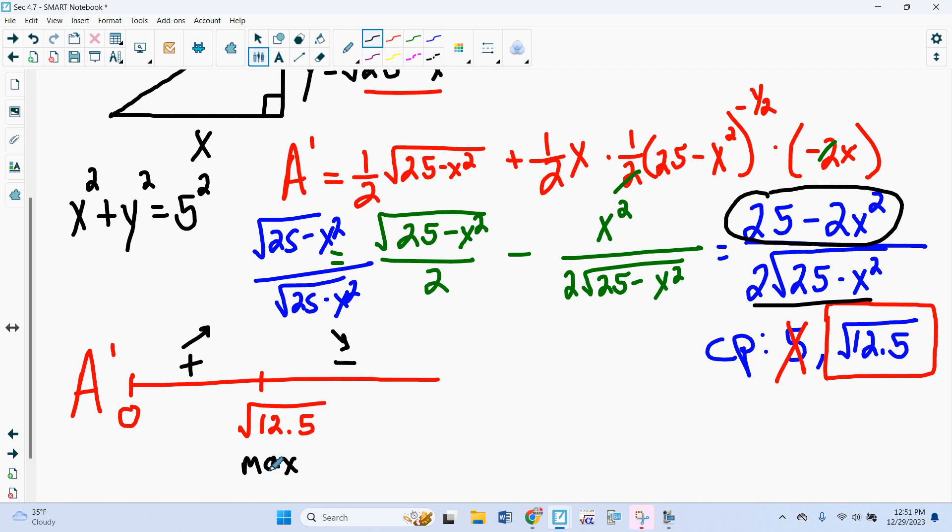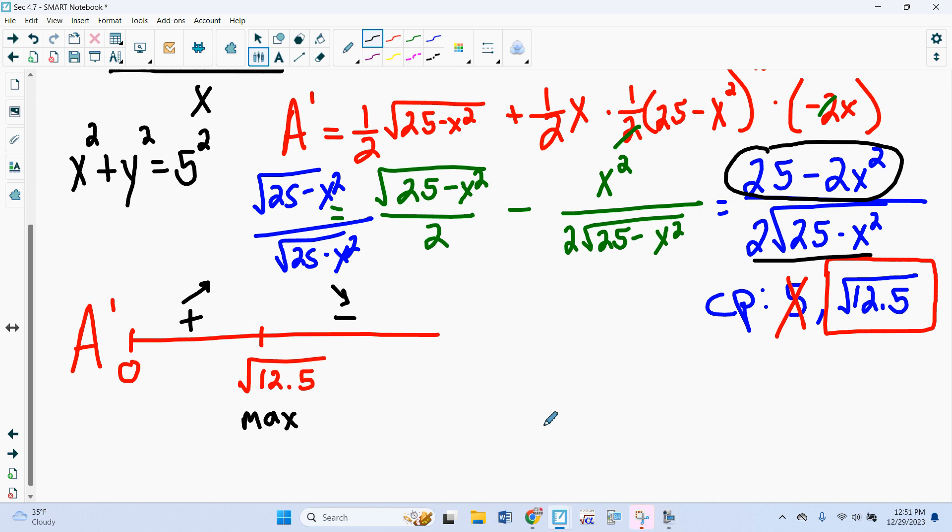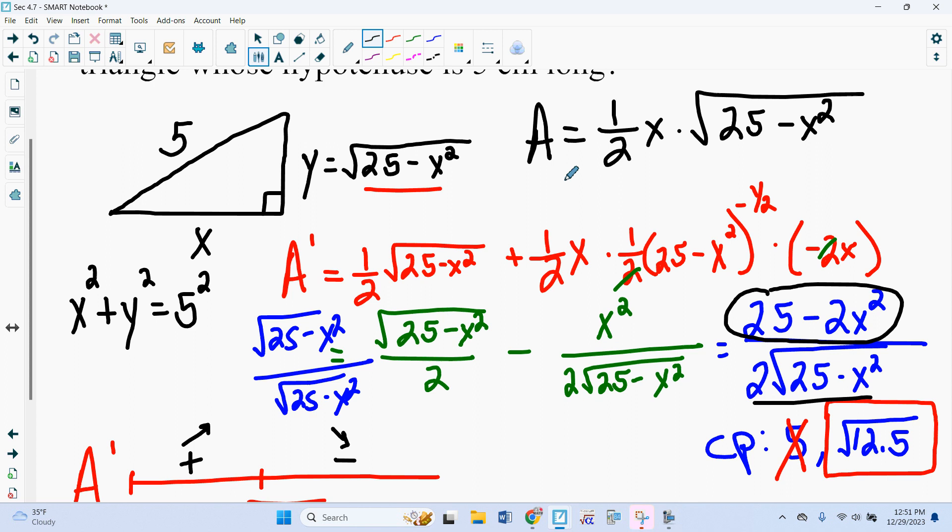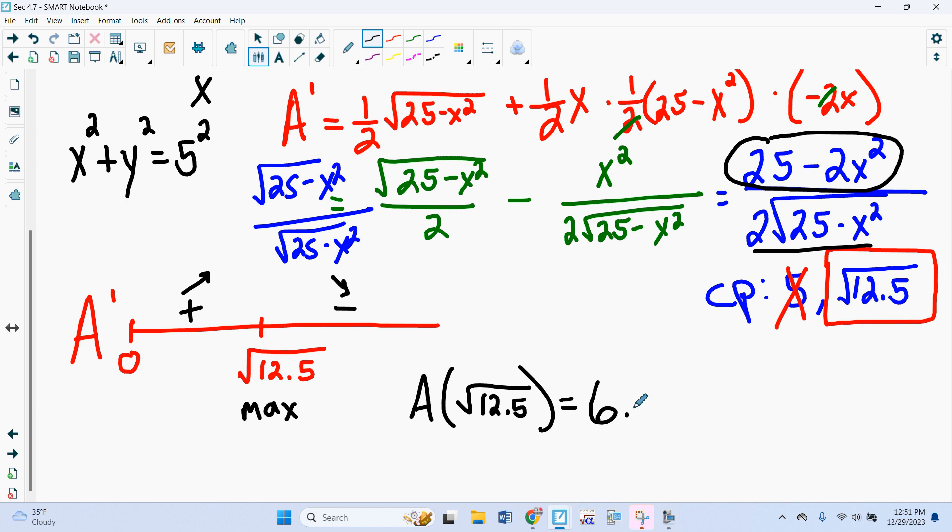Now, if we actually want to find what is, as the question says, what is the largest possible area, I now need to find the area and put my critical point back in to my original function, which is up here. And if I do that, work this out ahead of time, I get 6.25. So that is my maximum area.